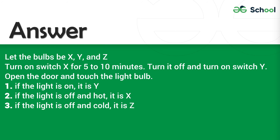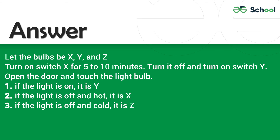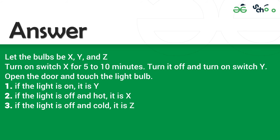Answer: Let the bulbs be X, Y, and Z. Turn on switch X for 5 to 10 minutes. Turn it off and turn on switch Y, open the door, and touch the light bulb.